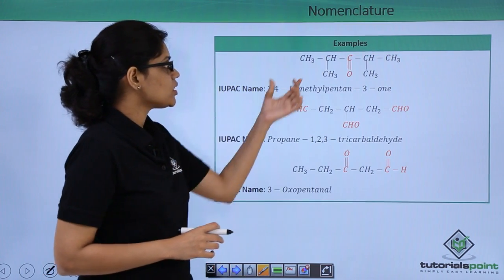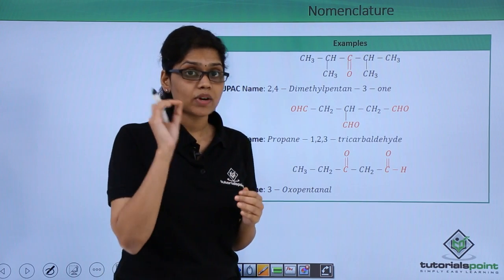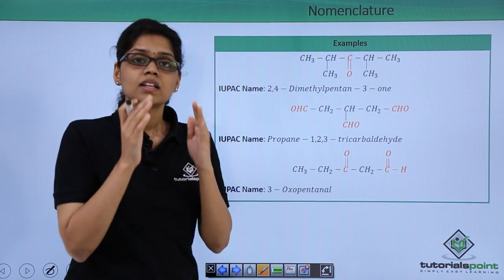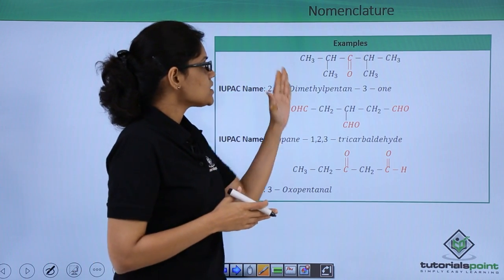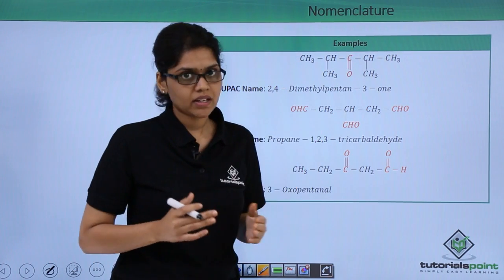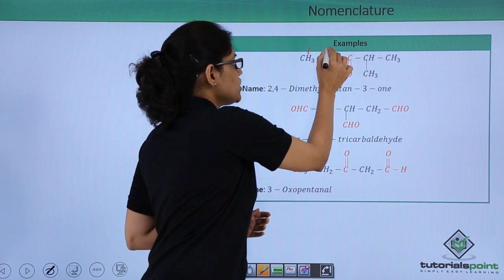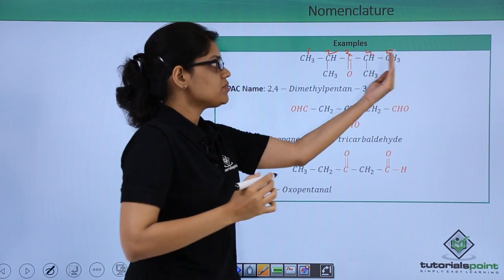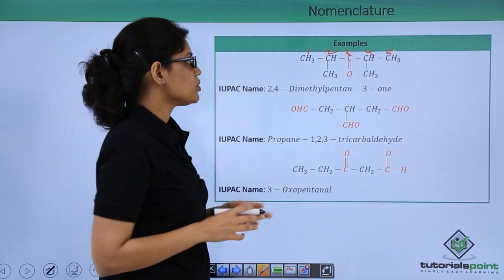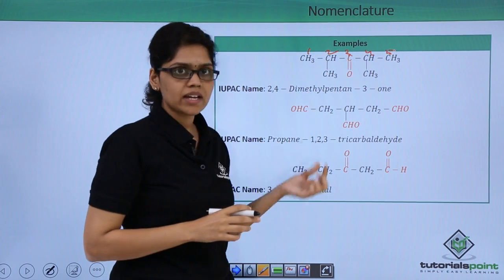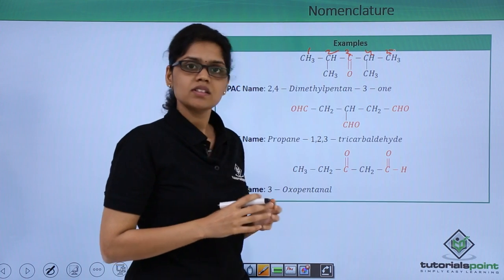Let us look at a few more examples. In this ketone structure with two methyl groups, numbering in ketones starts from the end closer to the C=O group. In this case, numbering from either side places the C=O at the third position: 1, 2, 3, 4, 5. Therefore, the IUPAC name is 2,4-dimethylpentan-3-one, since the C=O is at the third position.